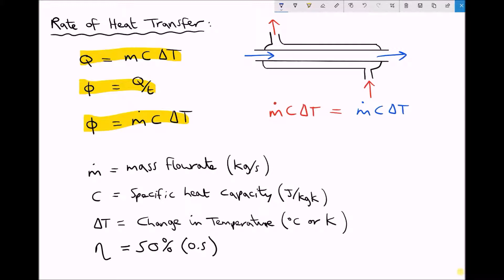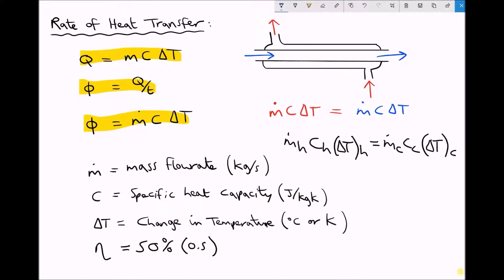Let's rewrite our formula to apply this. We have the mass flow rate of the hot fluid times the specific heat capacity times the change in temperature of the hot fluid. In a 100% efficient heat exchanger all of that would transfer to the cold fluid: mass flow rate times specific heat capacity times delta T for the cold fluid. But with only 50% efficiency, we multiply the rate of heat transfer from the hot fluid by the efficiency. So if the hot fluid gives up 200 watts, the cold fluid only gains 100 watts.